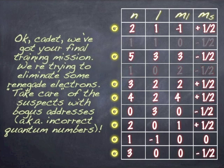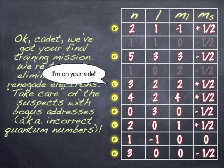Next one, what do you think? Exactly legit. N can be 3. If N is 3, L can be 2. If L is 2, M sub L can be 2. We're down to negative 2 and you can have a spin up.